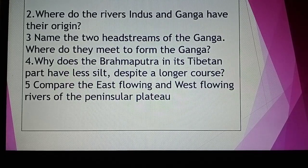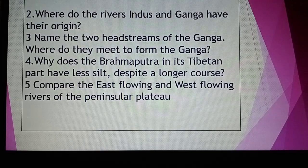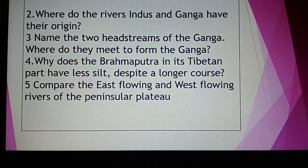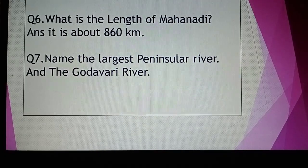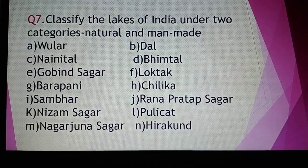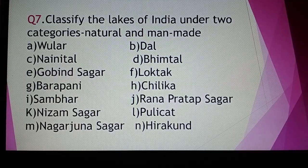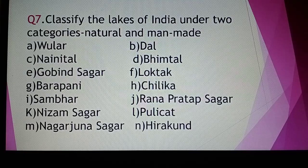Question 2 — Where do the rivers Indus and Ganga have their origin? Question 3 — Name the two headstreams of Ganga and where they meet to form the Ganga. Question 4 — Why does the Brahmaputra in its Tibetan part have less silt despite a longer course? Question 5 — Compare the east flowing and west flowing rivers of the peninsula. Question 6 — Classify the lakes of India under two categories: natural and man-made. Natural lakes include Dal, Nainital, Bhimtal, Gobind Sagar, Loktak, Bharapani, Chilka, Sambar, Pulicat. Man-made include Rana Pratap Sagar, Nizam Sagar, Nagarjunasagar, Hirakud. All questions done. Thank you.